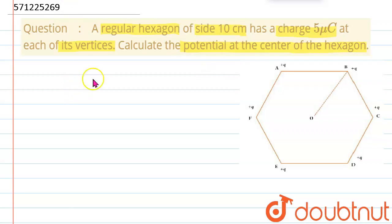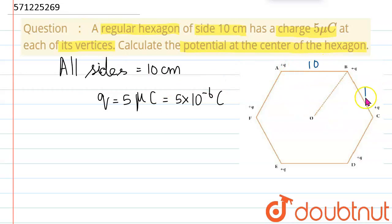We are given a regular hexagon where each side is equal to 10 cm. The charge on each vertex is 5 μC, which can be written as Q = 5 × 10⁻⁶ C. We need to find the value of potential at the center of the hexagon using these given values.